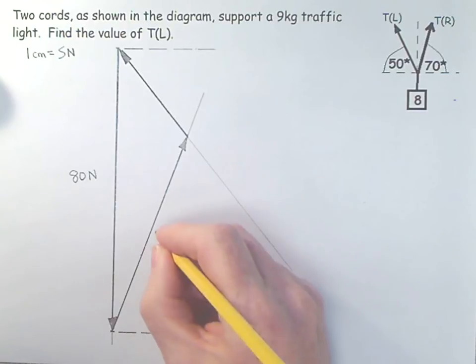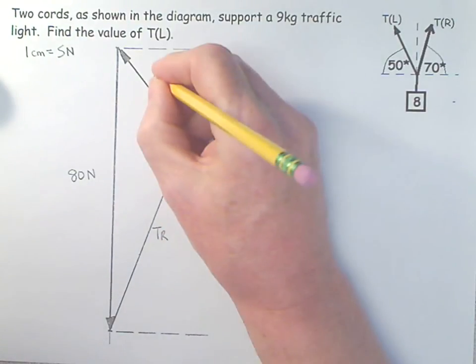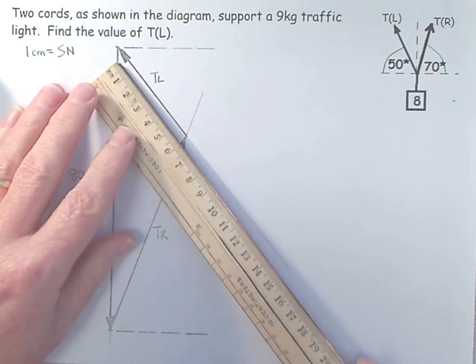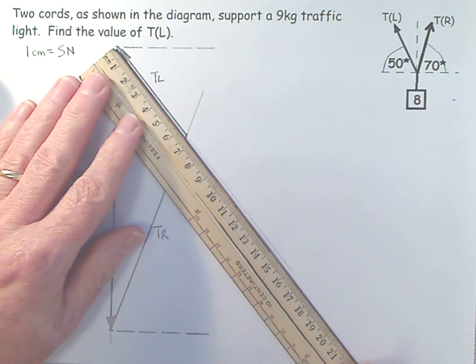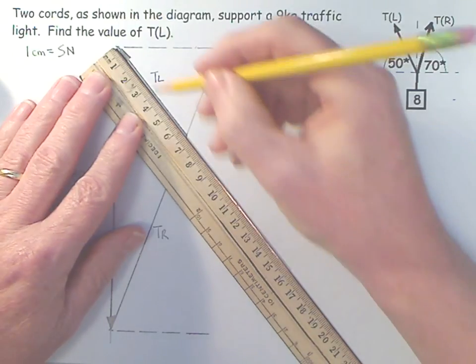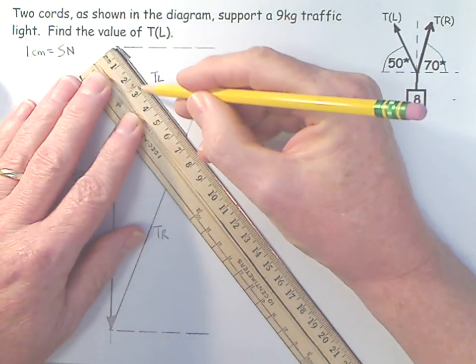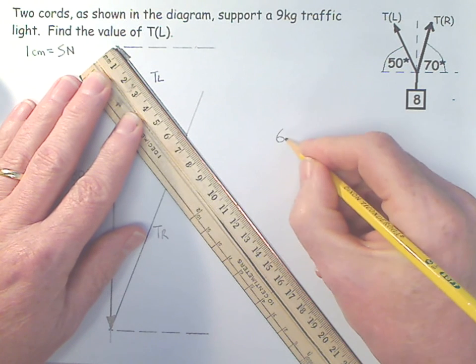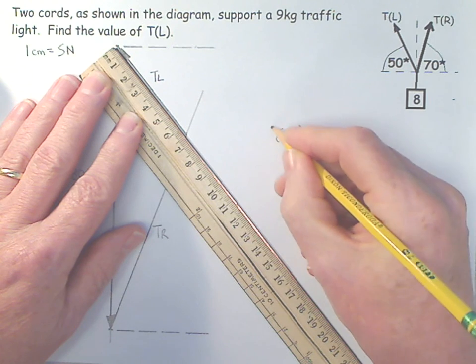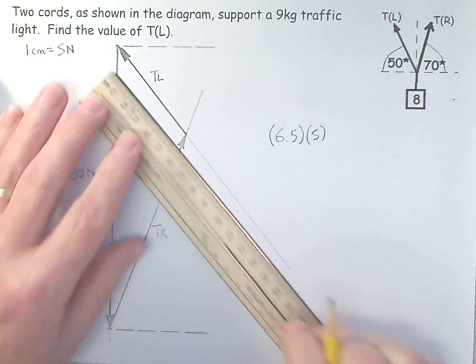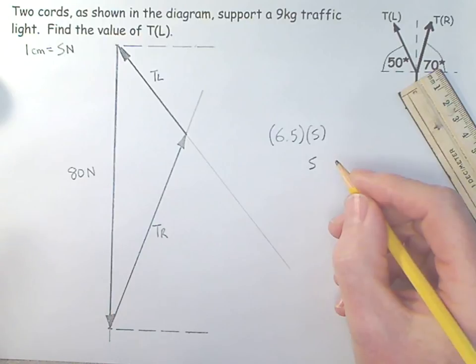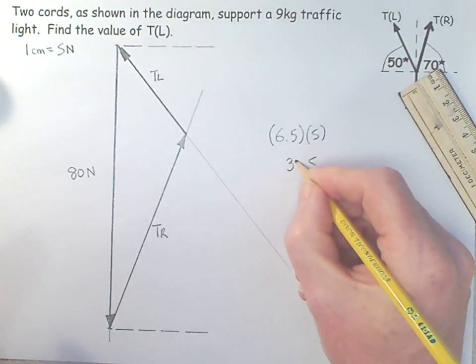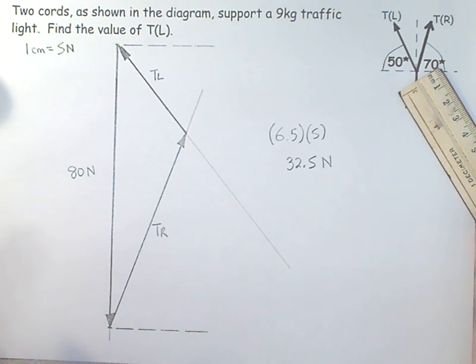So this is pointing to the right, so this is T right. And this is pointing to the left, which is T left. And now I need to find my answer. T left is what I'm looking for. And I don't want to stick my head directly in the camera. So this is going to be one, two, three, four, five, six, six and a half. Six and a half centimeters. Six point five centimeters. And each centimeter is worth five newtons. So five sixes, five sixes, thirty, thirty, thirty two, thirty two point five newtons.